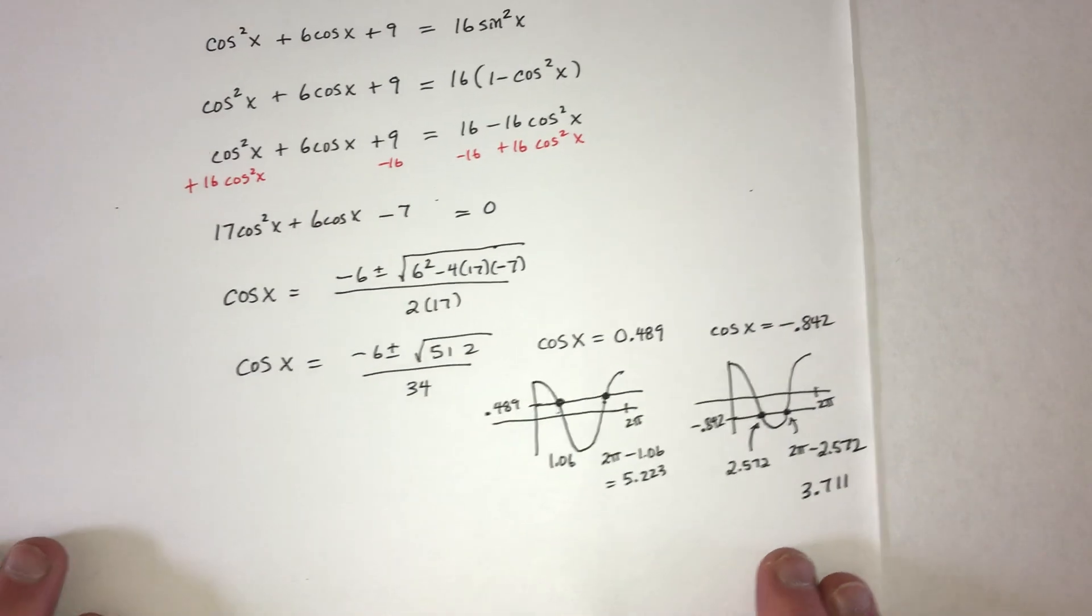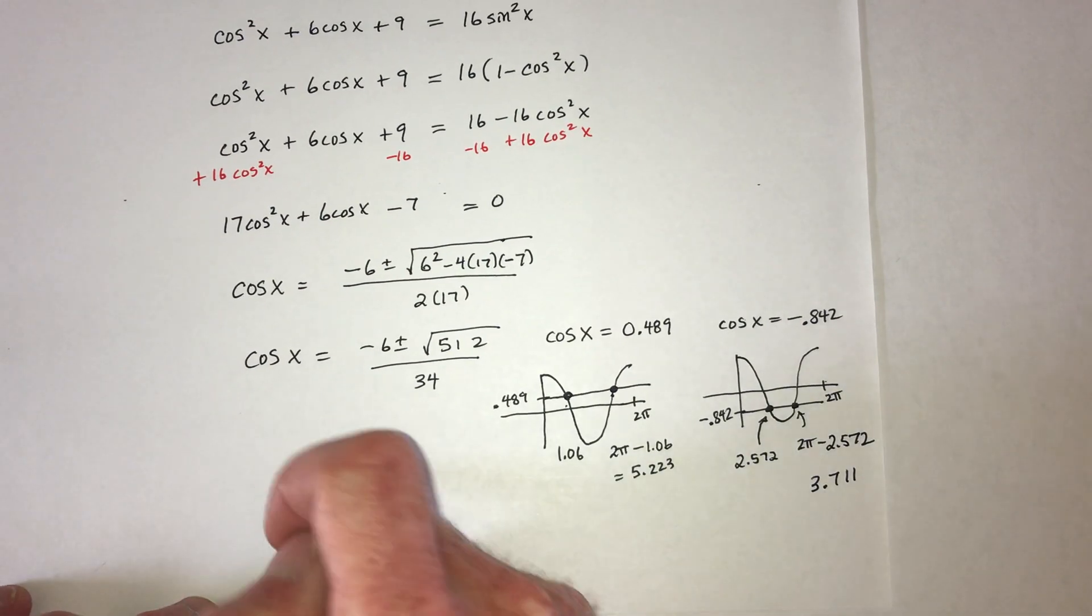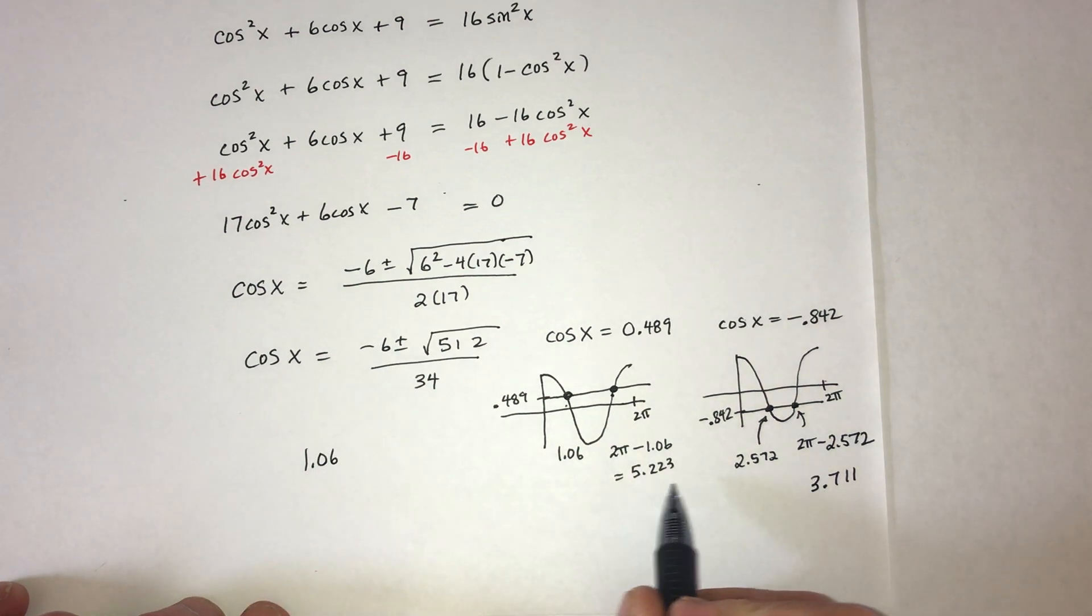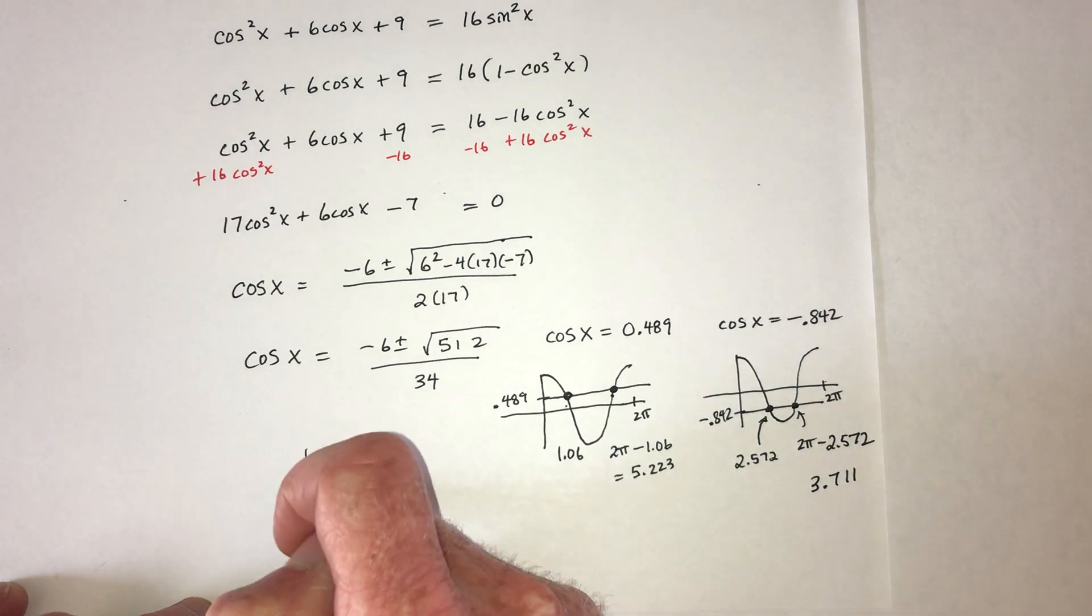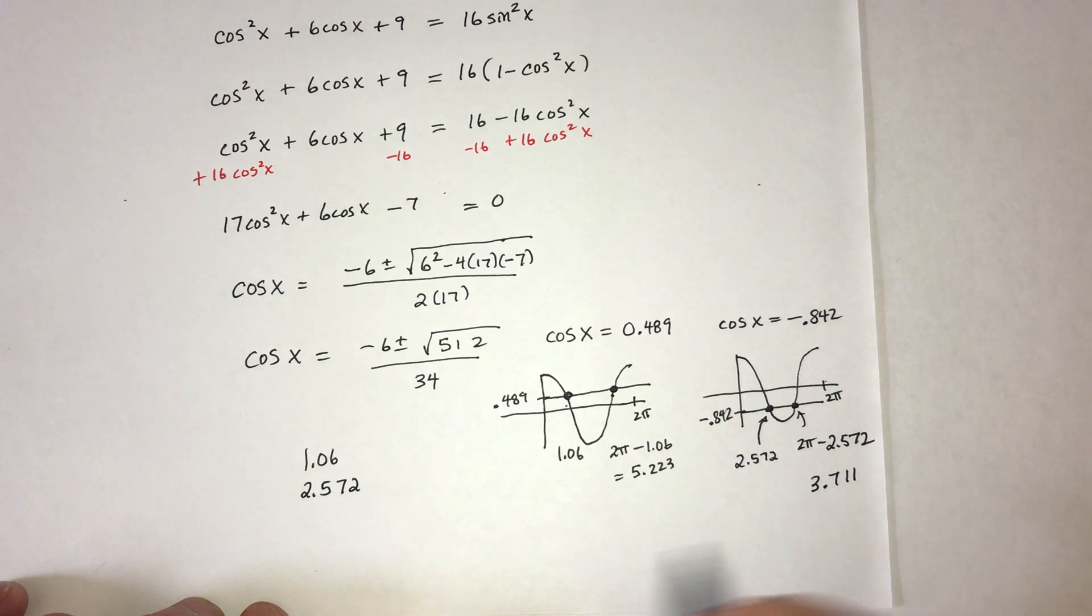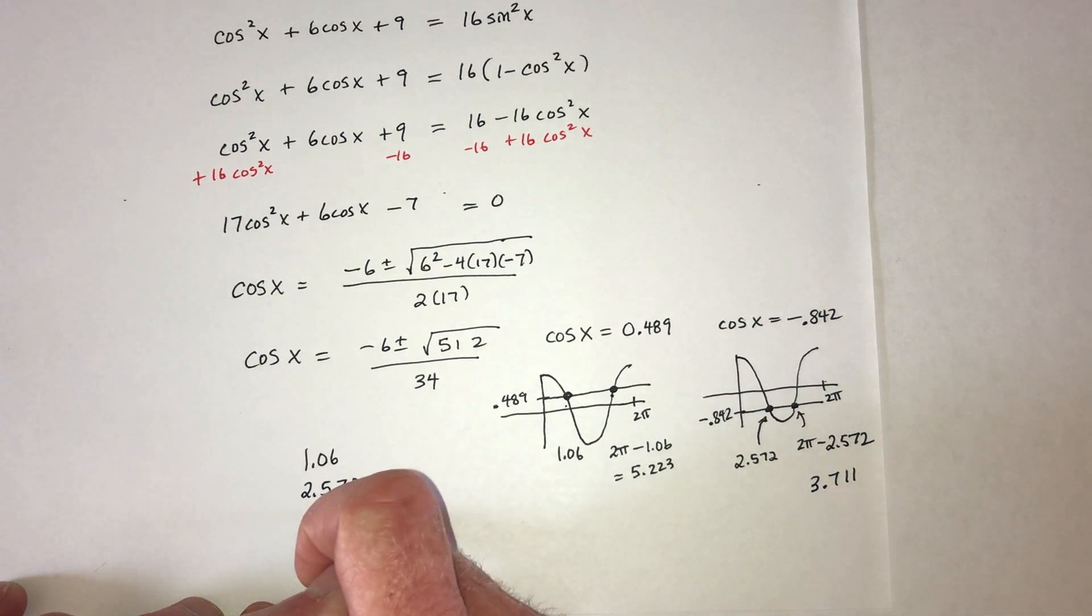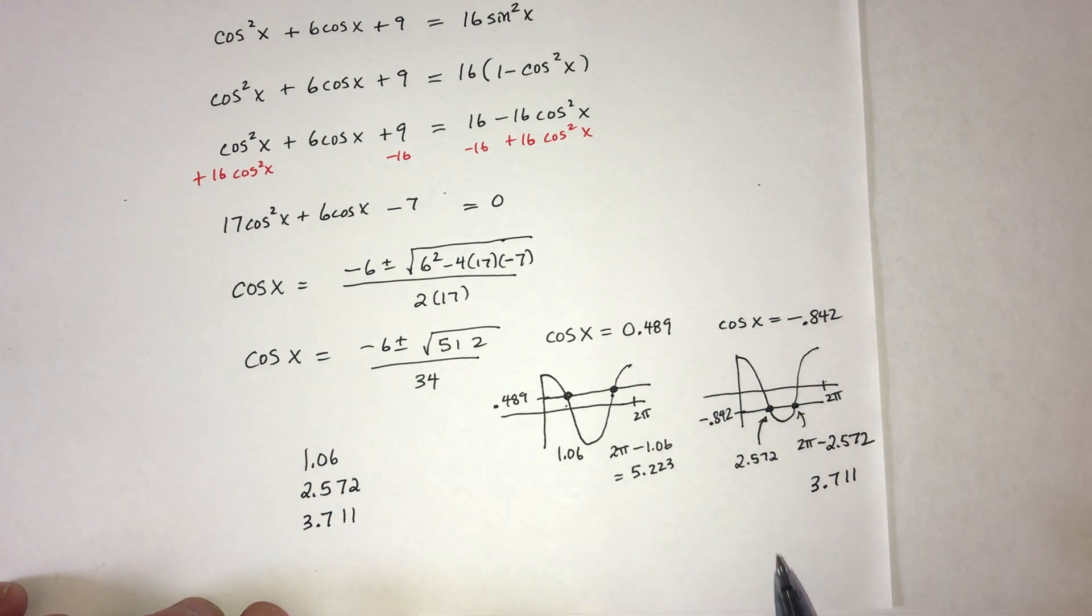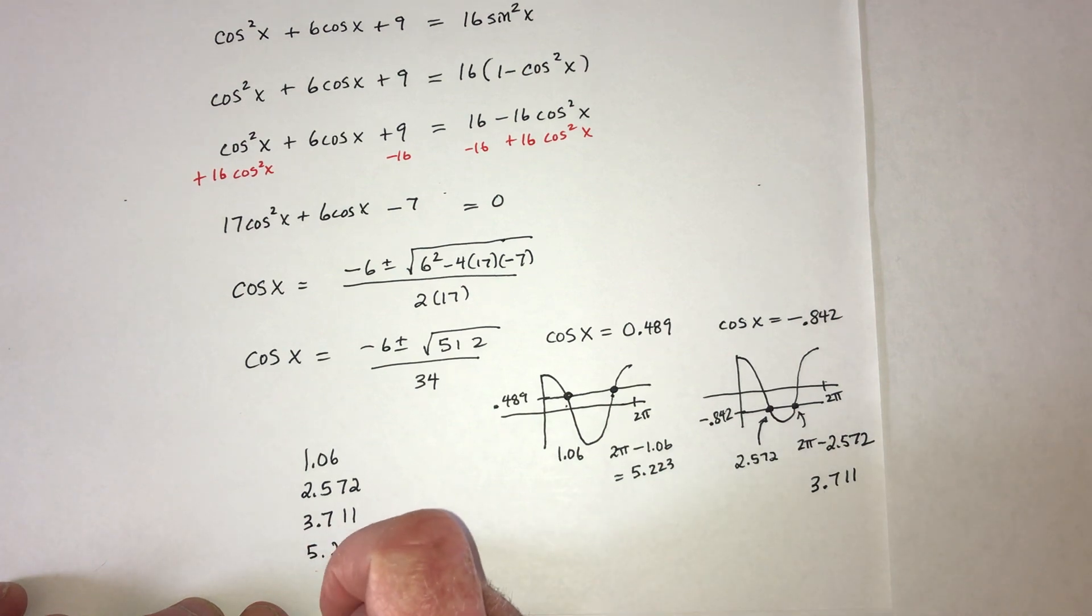So I get 1.06. Next would be, I'm going to put them in order. Next is 2.572. Next would be 3.711. And last would be 5.233.